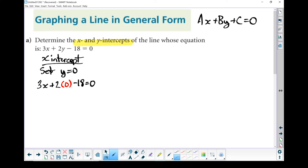Use some algebra, and from that I should be able to isolate and figure out what my x-intercept is. So 2 times 0 is going to give me 0. 3x minus 18 equals 0.